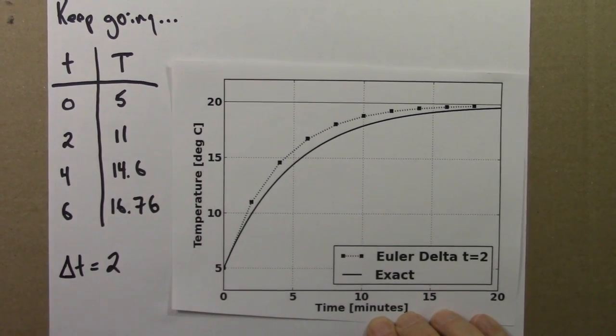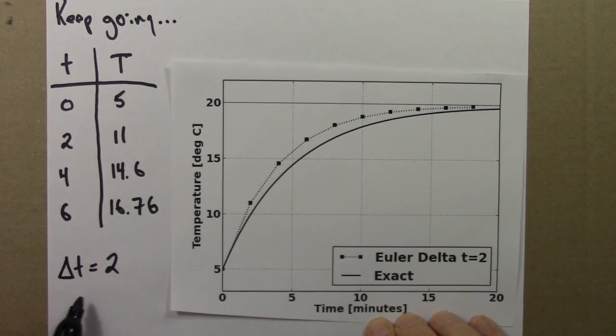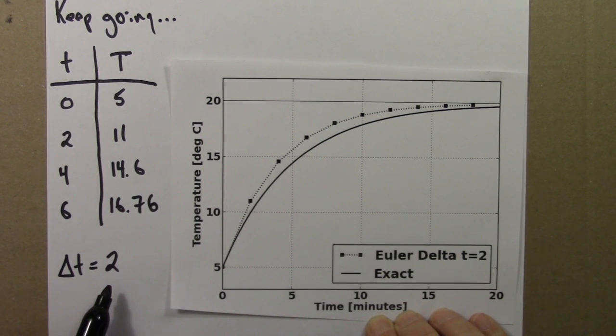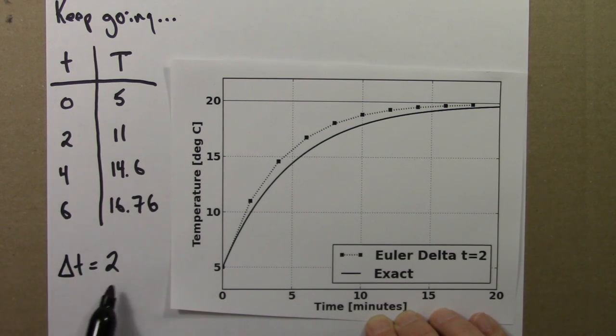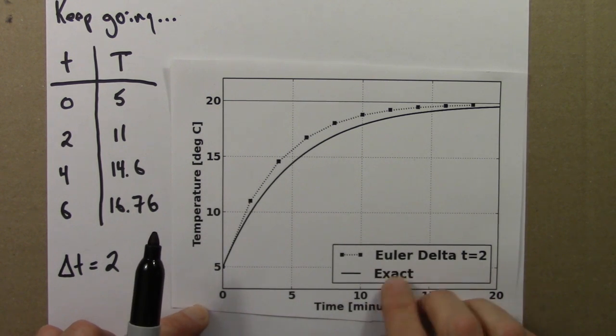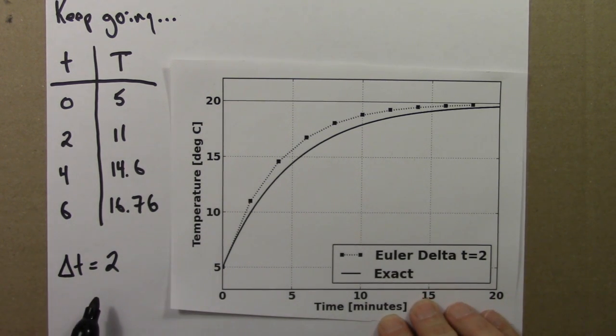For this example, I chose a step size of 2, a delta T of 2. I said let's figure out the temperature, capital T, every 2 minutes. But it's this step size that got us into trouble because I had to pretend that a constantly changing rate was actually constant over this time of 2 minutes. And that's clearly not true. So a way we could do better with this Euler method is to use a smaller delta T.